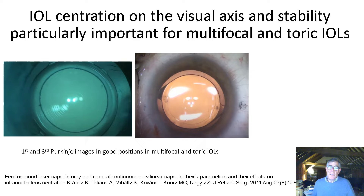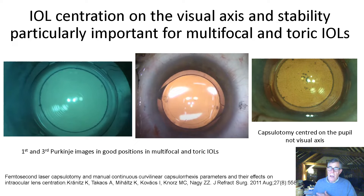IOL centration on the visual axis and stability are particularly important for multifocal and toric IOLs. Here we can see on the right the first and third Purkinje images in a good position in multifocal and toric IOLs. We can also see an example where the image is not where you'd like it to be, and although there is coverage, it's decentred as far as the capsulotomy is concerned.